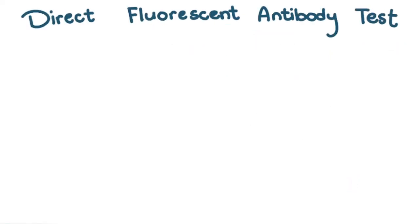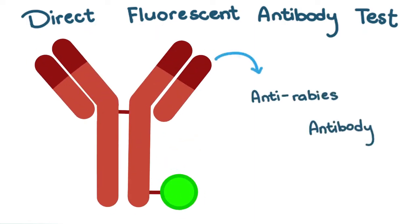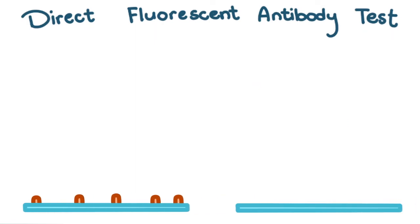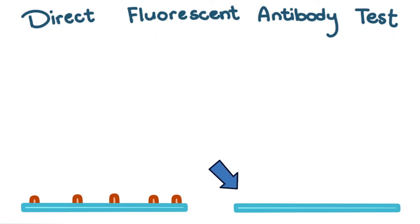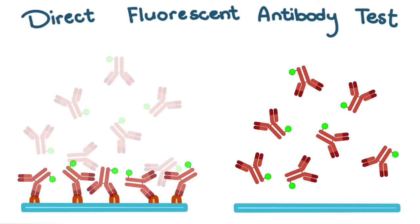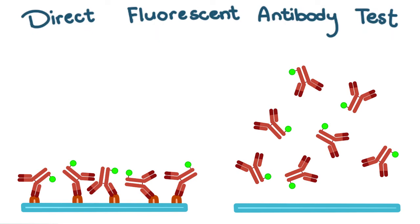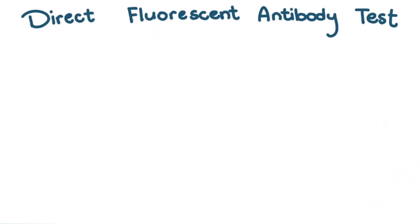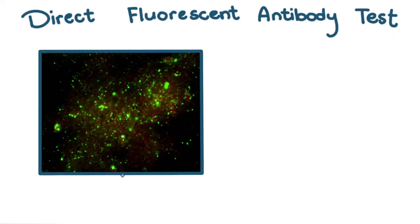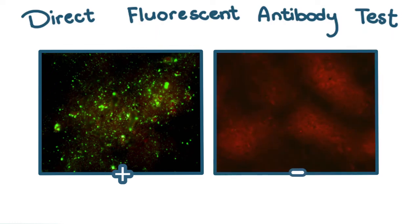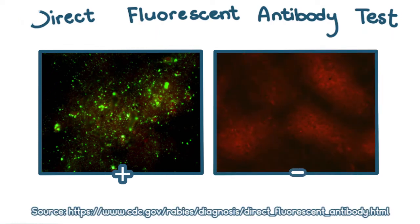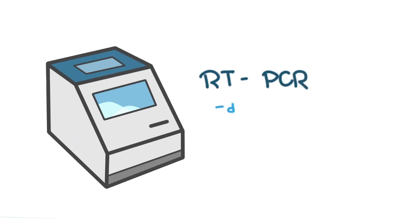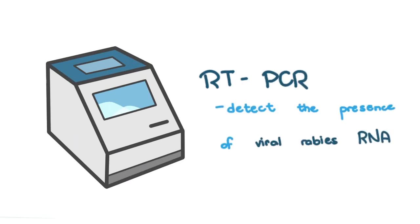The Direct Fluorescent Antibody Test is the current test of choice. It works like this: there's an anti-rabies antibody attached to a fluorescent compound to make the antibody glow. Applied to two tissue sections — one with rabies antigen and one without — the antibody binds where antigen is present and is washed off where it isn't. They are then examined under a fluorescence microscope: a positive result shows green glowing areas, while a negative result does not. RT-PCR can also be done to detect the presence of viral rabies RNA, but it's a bit more expensive.